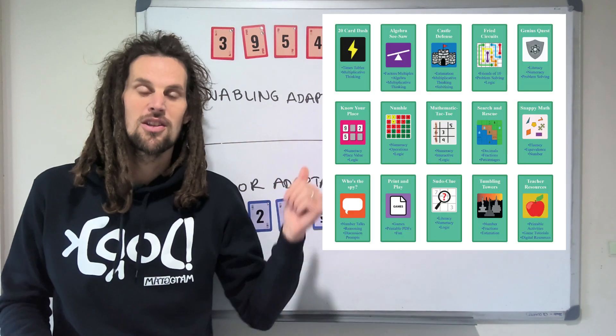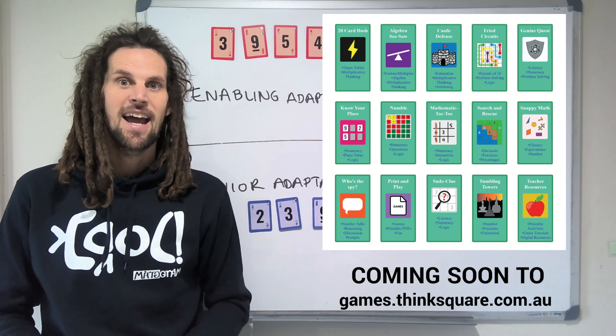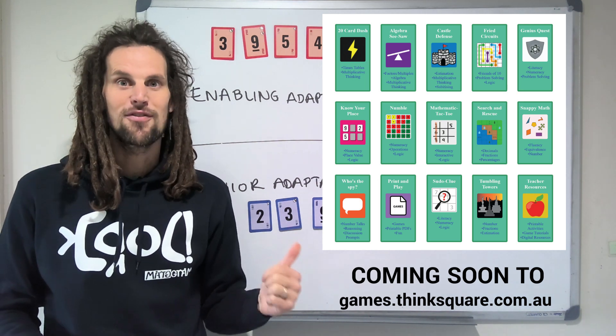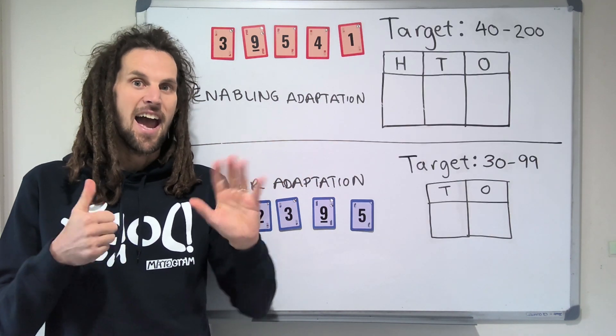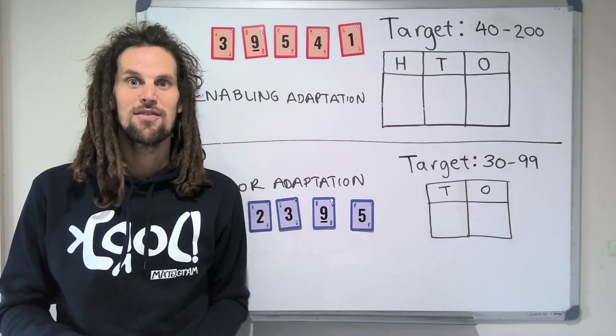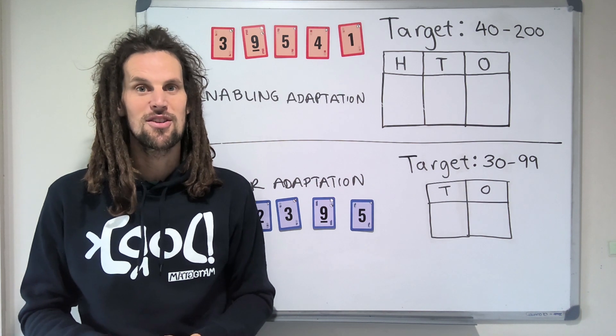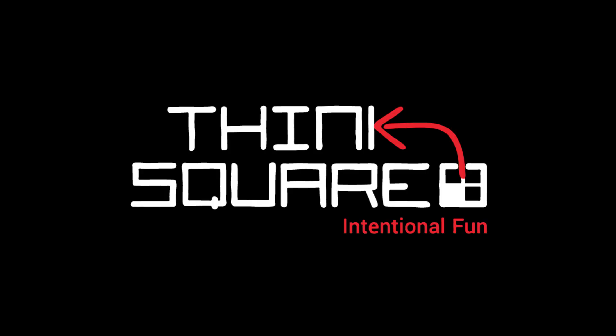We will probably put this up online at games.thinksquared.com.au on the GameSuite very soon. And otherwise, I would love for you to prove to me that there is a number. If you pick 6 cards and choose a number between 300 and 999, and prove to me that you can't get within 4 of that. If you can do that, I will send you something nice. Send me an email, andrew@thinksquared.com.au.